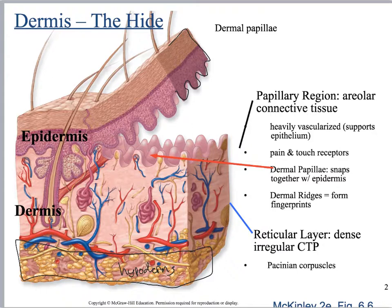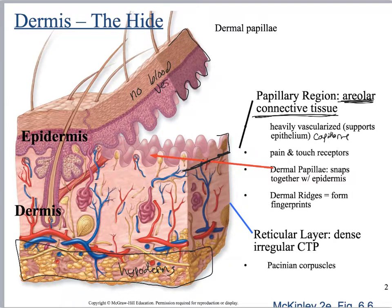We're going to mark this out. We have the papillary region right here. What you want to remember with the papillary region of the dermis is it's made out of areolar connective tissue proper. It has lots of blood capillaries. Remember that the epithelium has no blood vessels — it needs to stay alive, which means everything has to diffuse from the areolar or papillary region into the epidermis. So you have lots of blood capillaries, and pain and touch receptors.